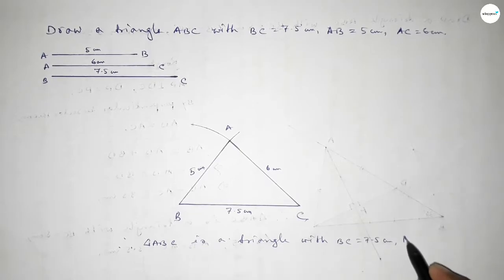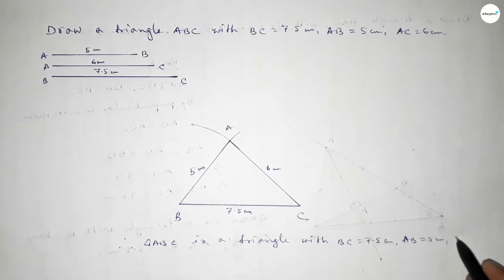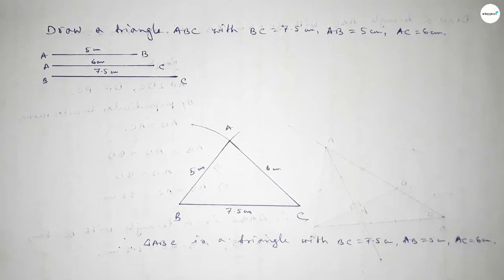Triangle ABC is a triangle with BC equal to 7.5 centimeters, AB equal to 5 centimeters, and AC equal to 6 centimeters. That's all. Thanks for watching — if this video is helpful to you, please share it with your friends. Thanks for watching.